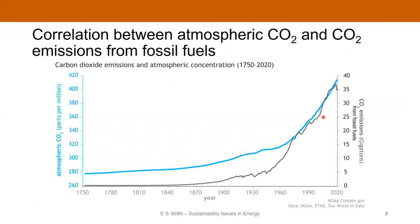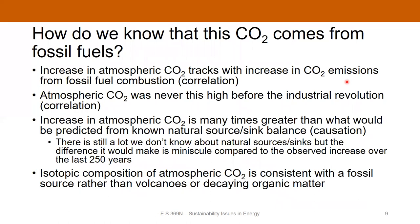If you plot both atmospheric CO2 in parts per million and CO2 emissions from fossil fuels in gigatons on the other y-axis over time, you can see that they both go up at the same time. There's definitely a correlation. Now let's all remember: correlation does not equal causation. However, we have scientific understanding to inform our analysis. Obviously, the increase in atmospheric CO2 tracks with the increase in CO2 emissions from fossil fuel combustion. Also, atmospheric CO2 was never this high before the Industrial Revolution going back 800,000 years.